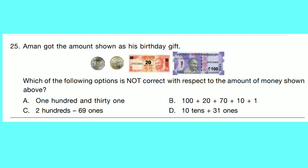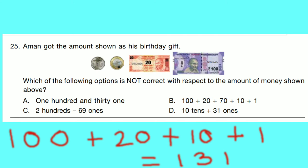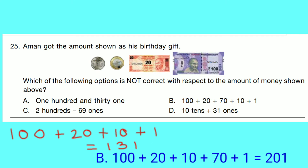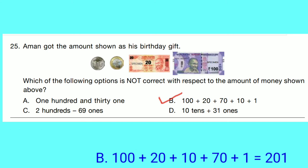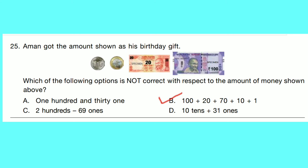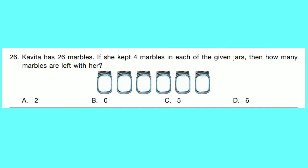Question number 25: Aman got an amount shown as his birthday gift. Which option is not correct? Amount shown: 100 plus 20 plus 10 plus 1 equals 131. Option A: 131 equals 131 — correct. Option B: 100 plus 20 plus 70 plus 10 plus 1 equals 201. Clearly 201 is not equal to 131, so option B is the answer — it does not show the same amount. Option C: 200 minus 69 equals 131. Option D: 10 tens plus 31 ones equals 131.